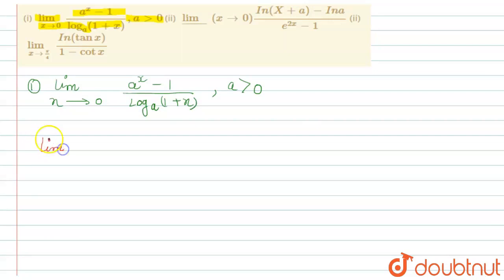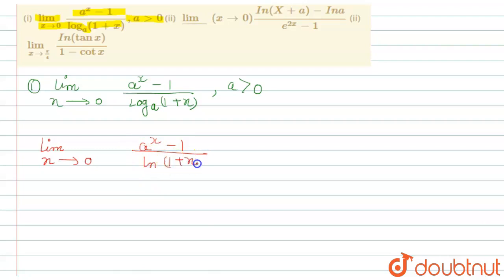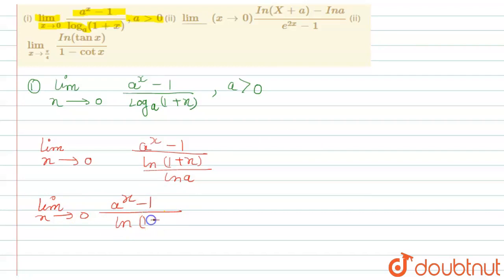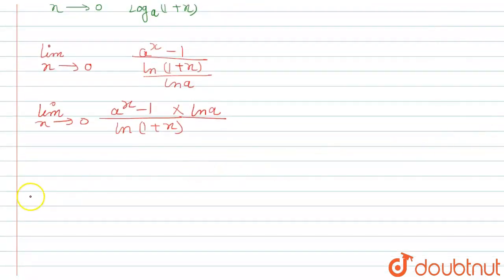First, we will convert log base a into the form of ln. So limit x tends to zero, a raised to the power x minus one, upon ln(1 + x) divided by ln a. We can rewrite this as: limit x tends to zero, a raised to the power x minus one upon ln(1 + x), into ln a.